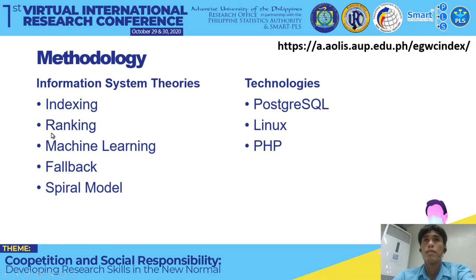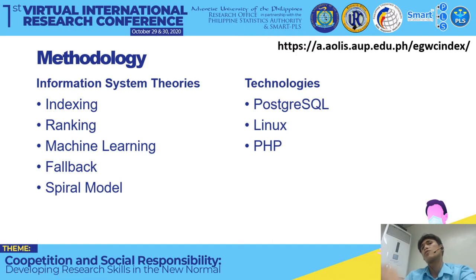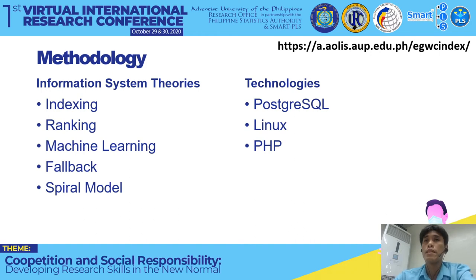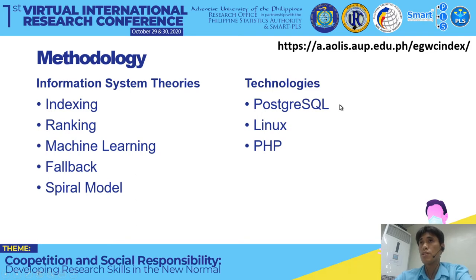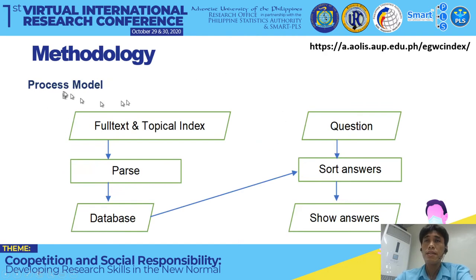The information system theories applied include indexing and ranking, like Google — more relevant results rank higher — and machine learning, so the system learns from existing likes and suggestions and becomes more intelligent. As a fallback, if there's no recommended or higher-quality answer, the system falls back to plain text search results. The development model is the spiral model, because with this kind of system you make it work, then keep improving it. The technologies used are PostgreSQL, Linux, and PHP.